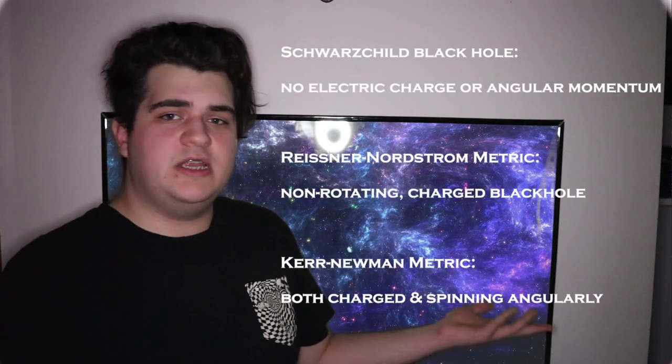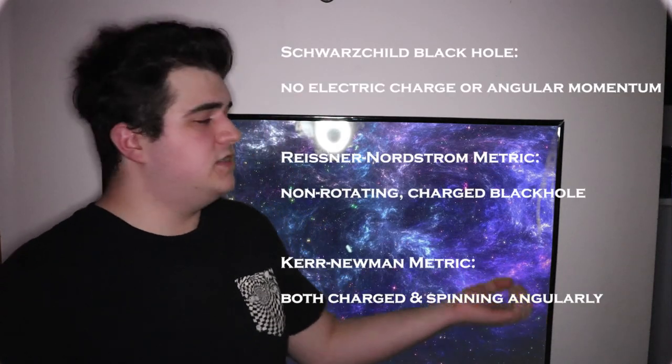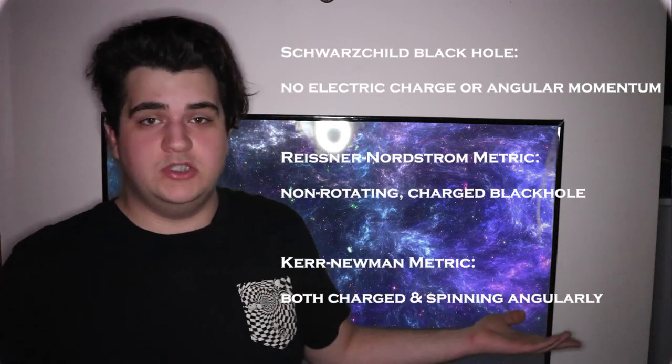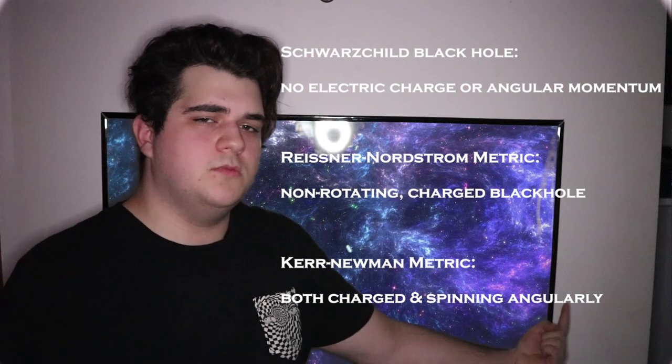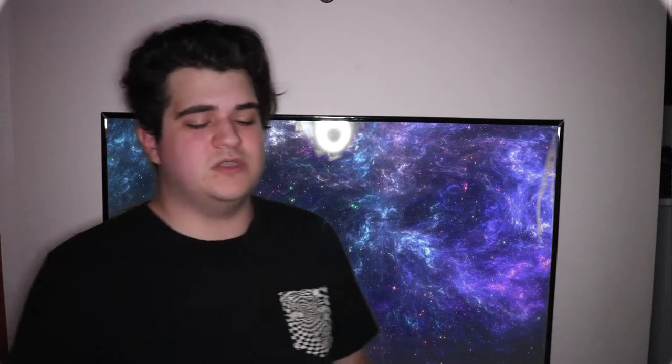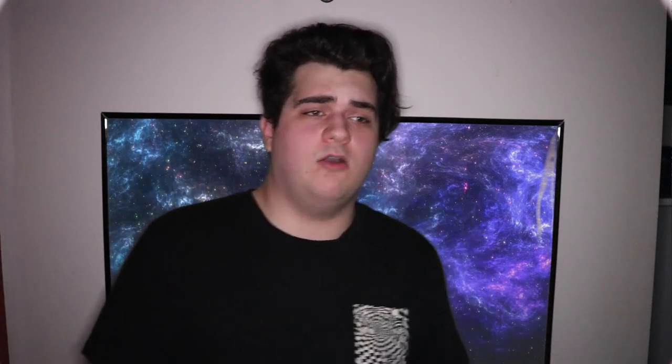The physical properties of a black hole vary mainly based on whether it has an electrical charge or an angular rotation. There are three different variants named for those properties, but the one I can pronounce is the Kerr-Newman metric — which describes our local supermassive black hole, Sagittarius A*.